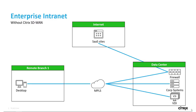Often, enterprise intranet architectures without SD-WAN route corporate data traffic from remote branches over an MPLS network to a central data center, and backhaul internet traffic through it for inspection. This can lead to poor user experience at the branches when there are WAN outages or congestion.